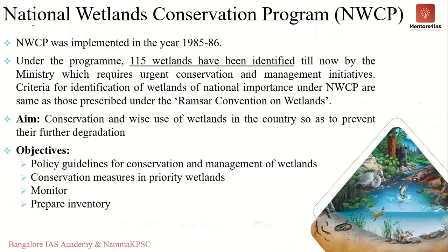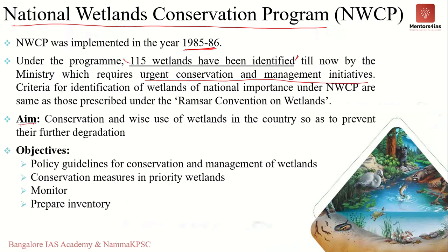The National Wetland Conservation Program was implemented in 1985–86, where 115 wetlands were identified which required urgent conservation and management intervention. The aim of this program is conservation of wetlands to prevent their further degradation and ensuring their wise use for the benefit of local communities and overall conservation of biodiversity.